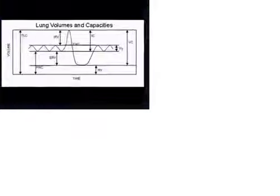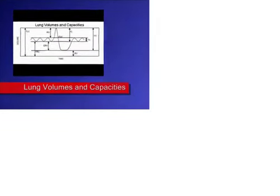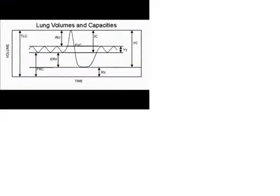Pictured here is the spirometry tracing showing all four lung volumes: tidal volume, inspiratory reserve volume, expiratory reserve volume, and residual volume, as well as all four lung capacities: inspiratory capacity, vital capacity, functional residual capacity, and total lung capacity. We will discuss each of these separately.